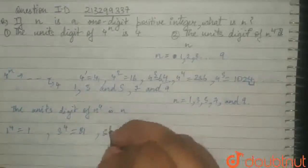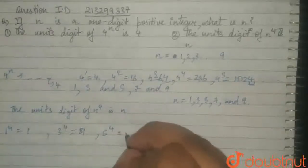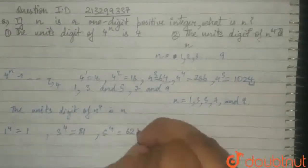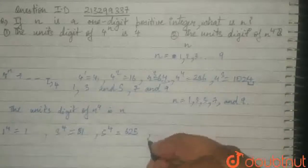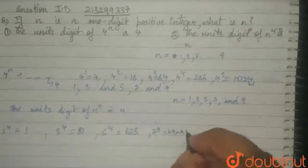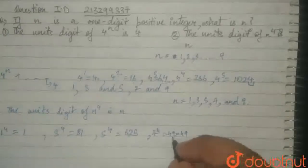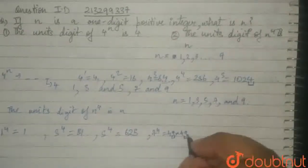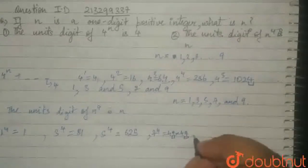5 raised to the power of 4 is 625. 7 raised to the power of 4 is 49 into 49. We don't really need to calculate, since the unit's digit will obviously be 9 into 9, which is 1.